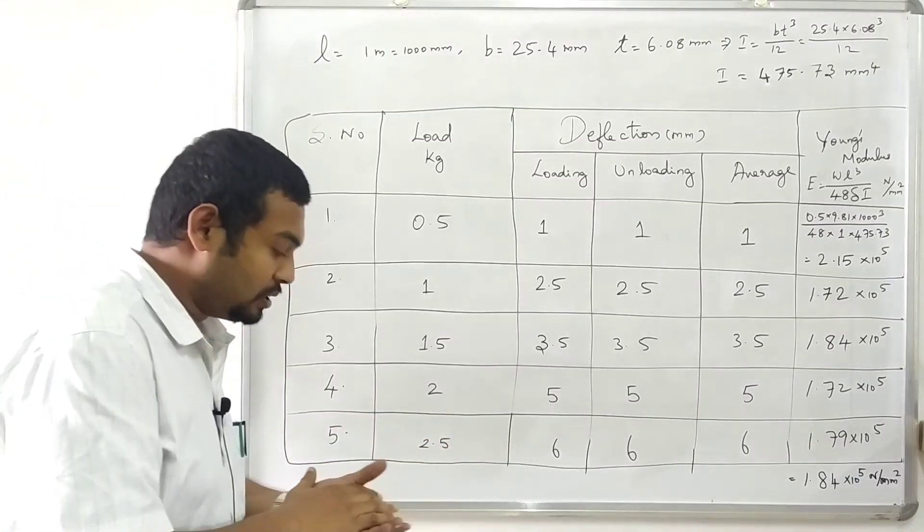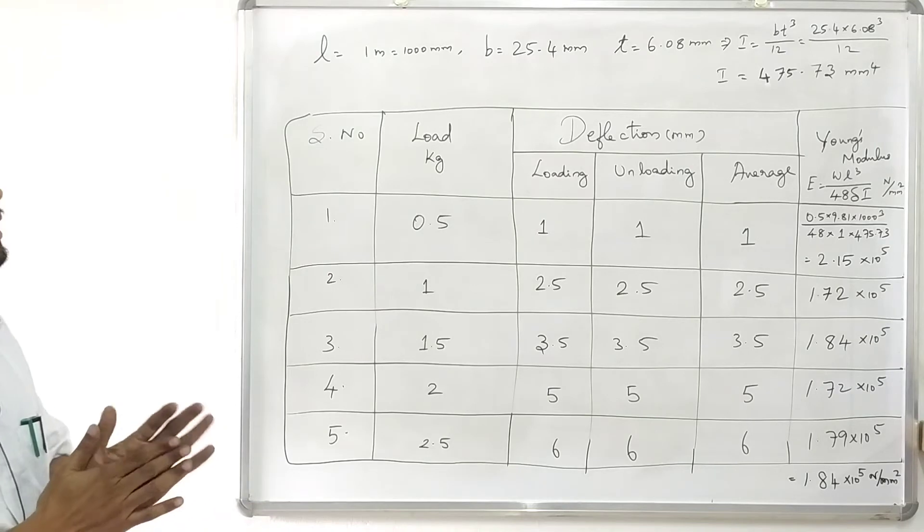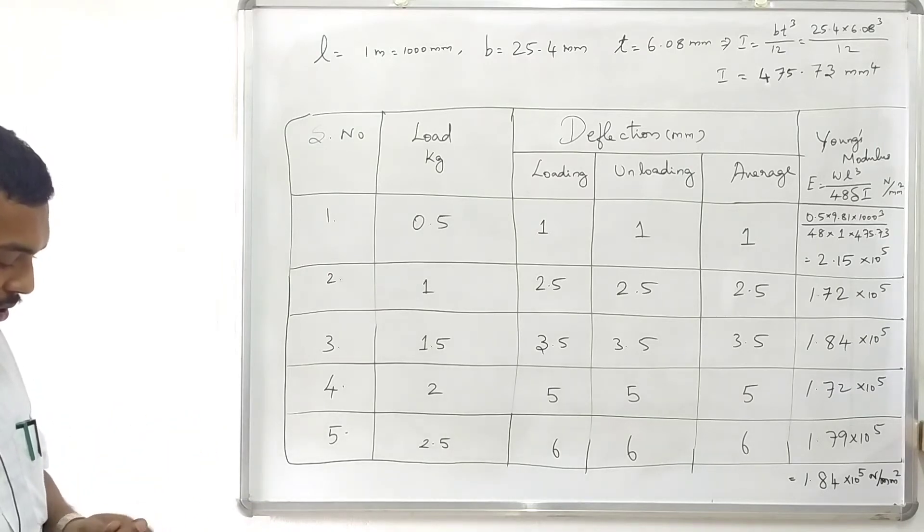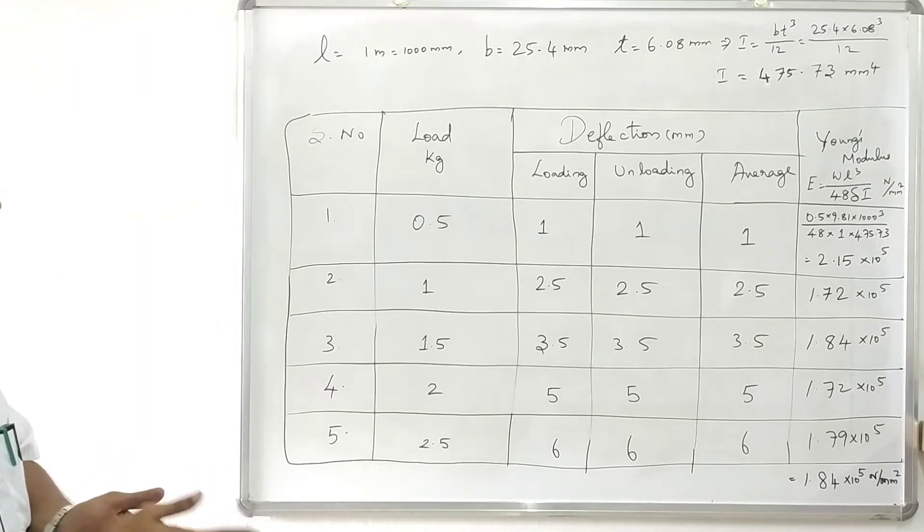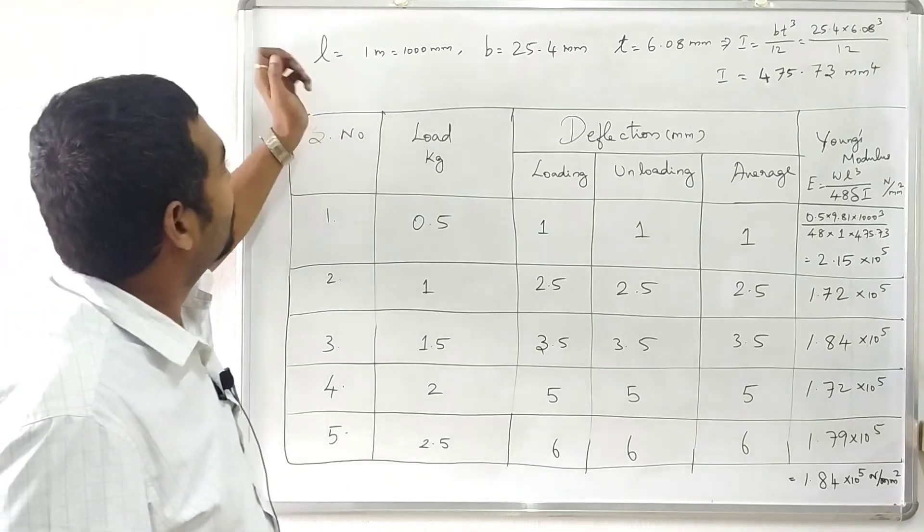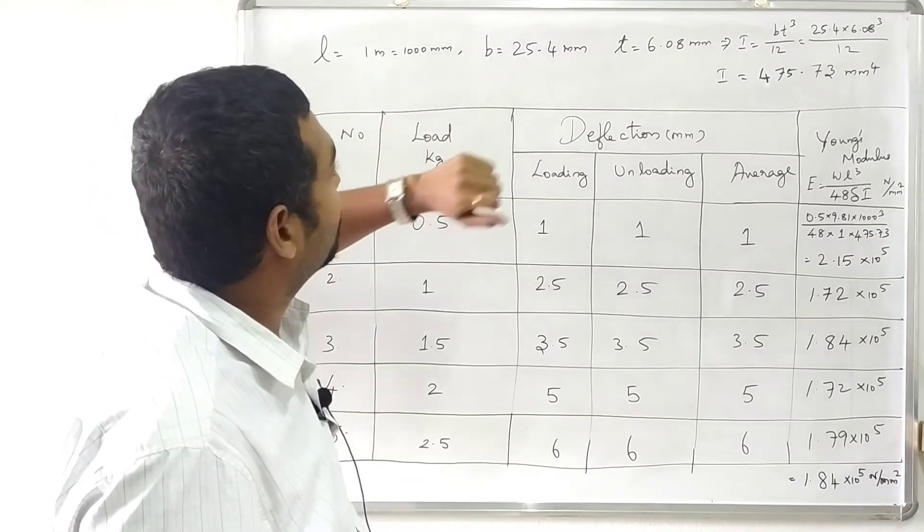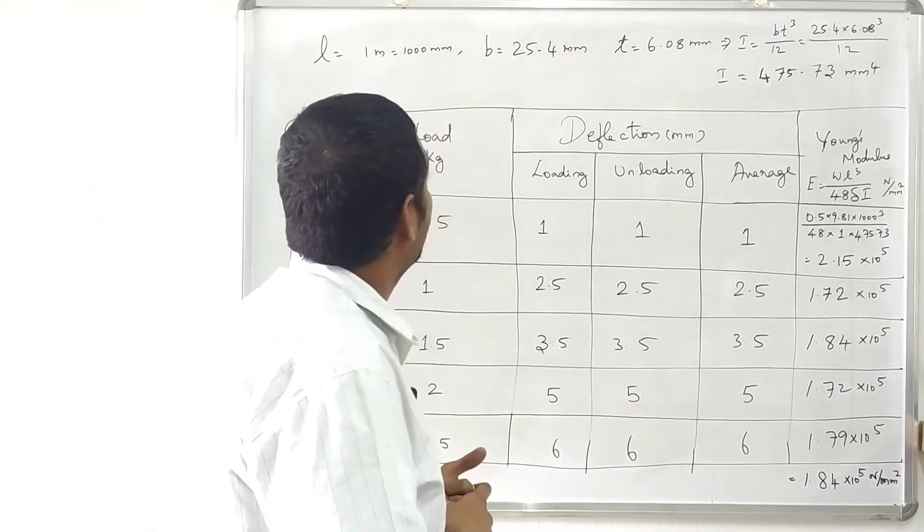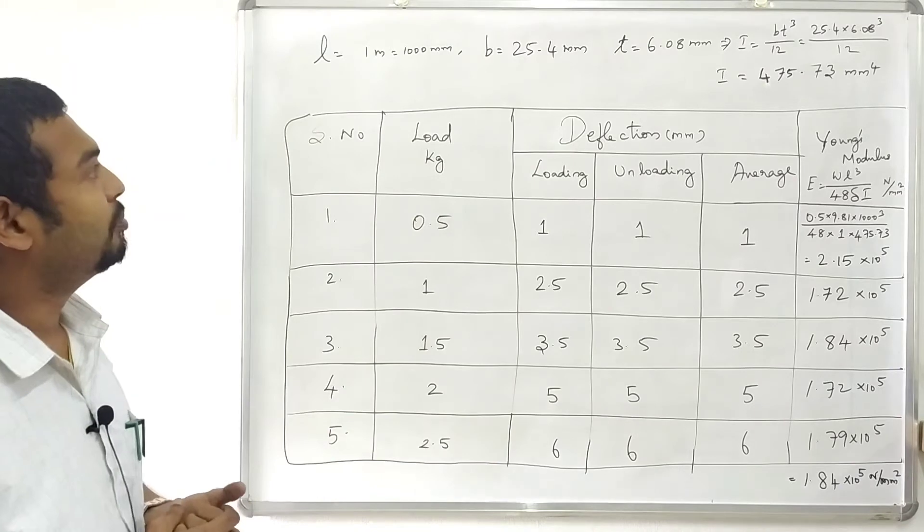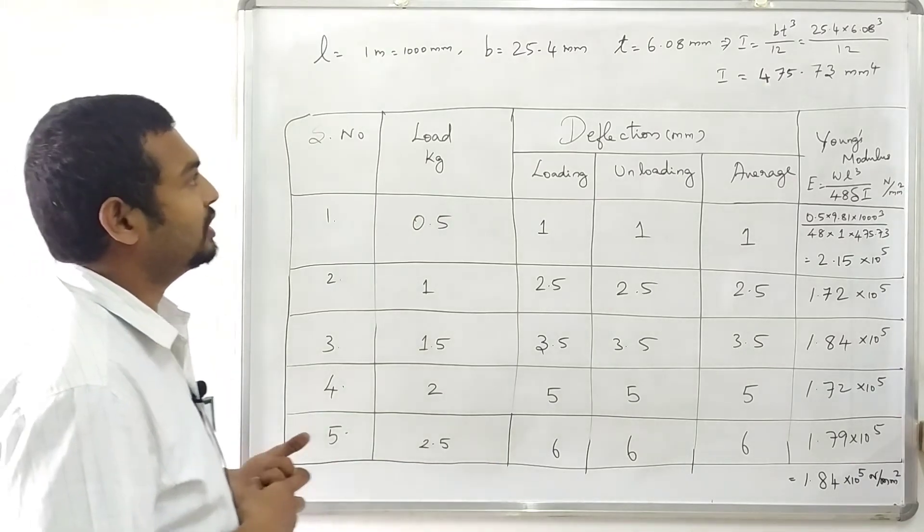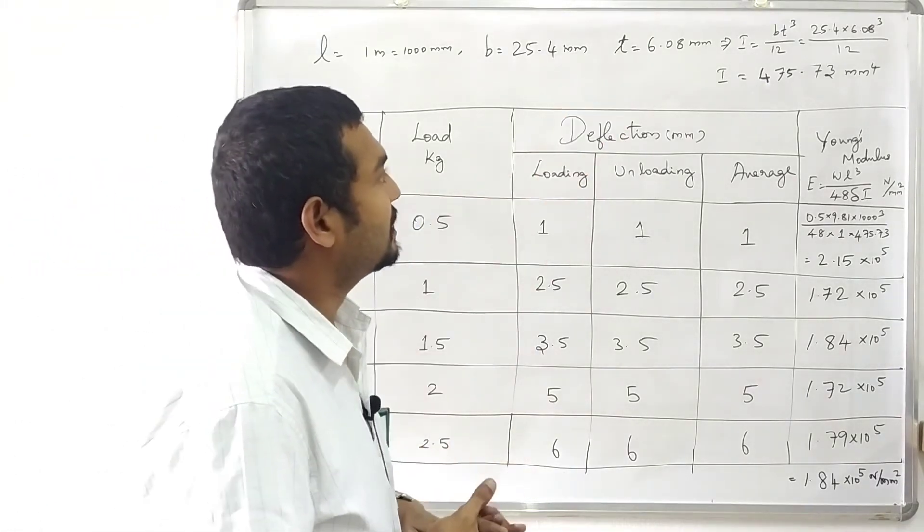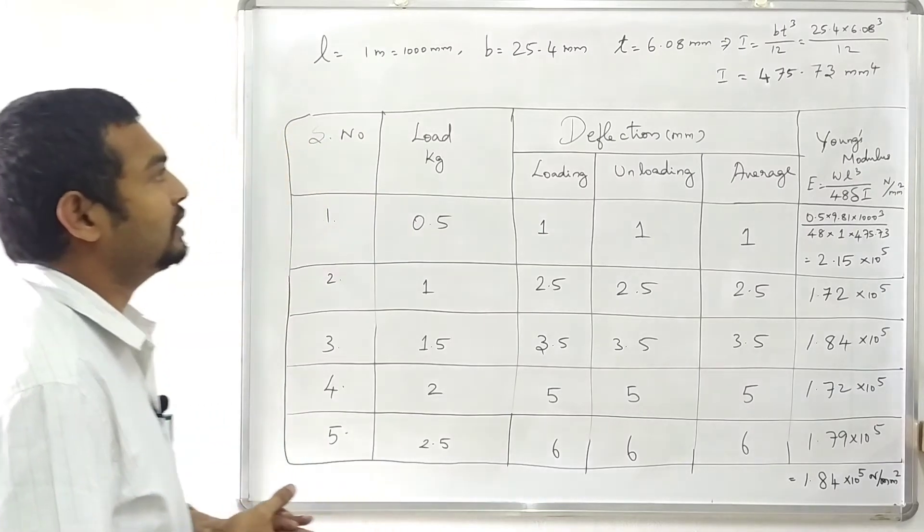Deflection test on steel and wooden beams, the procedure in the laboratory. That is the calculation. Length of supporting length, 1 meter. So 1000 mm. Breadth, width of beam, 25.4 mm. Next thickness 6.08 mm, the thickness.